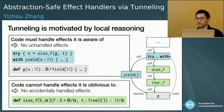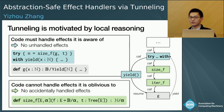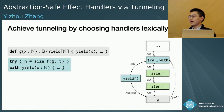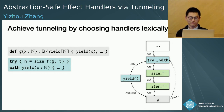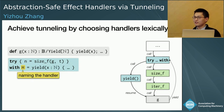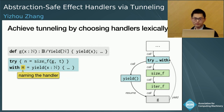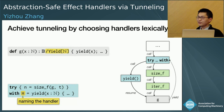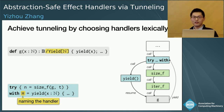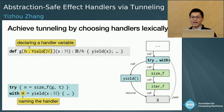Tunneling sounds like the programmer's wishful thinking — how does the runtime know which handler to tunnel effects to? The most straightforward way is to finalize the choice of handlers before the program even runs. Choosing handlers statically implies the need to name handlers. The try-with in the client code is syntactic sugar for naming the handler explicitly, and the name of the handler is in scope within the corresponding try block. A throws clause like throws yield is syntactic sugar for declaring a handler variable, and this handler variable will be instantiated by a concrete handler at runtime.